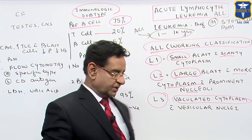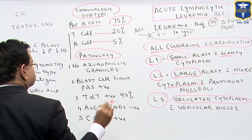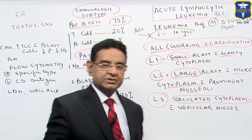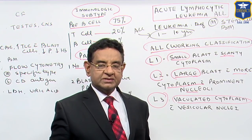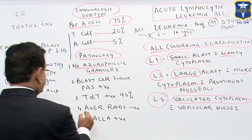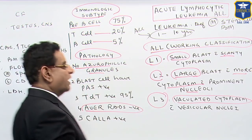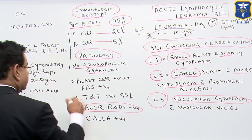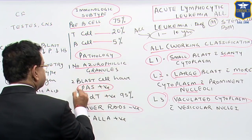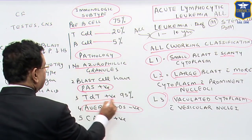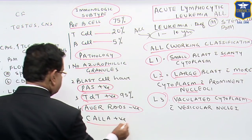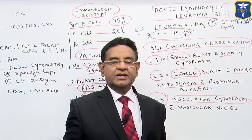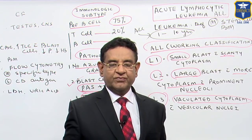Now we see the pathology, especially in the peripheral smear. We do not get any azurophilic granules in the peripheral smear. Similarly, Auer rods are not seen — these two are features of acute myeloid leukemia. What we get in ALL is PAS-positive material in the blast cells, and these cells are TdT positive and CALLA positive. So CALLA positive, TdT positive, and PAS positive — these are what we see in a case of acute lymphocytic leukemia.